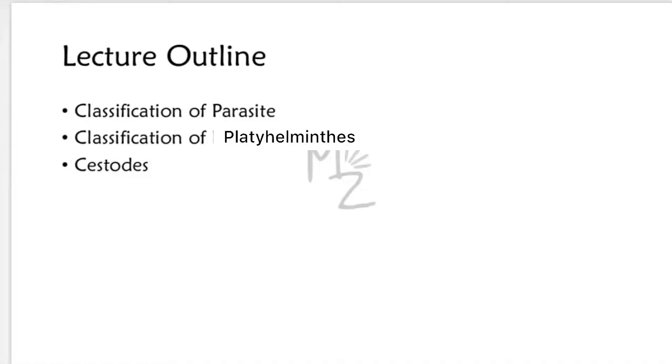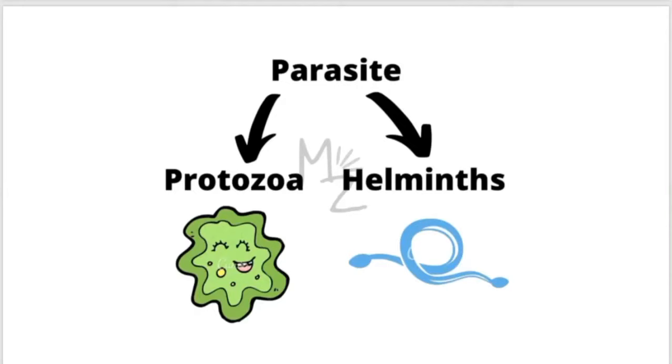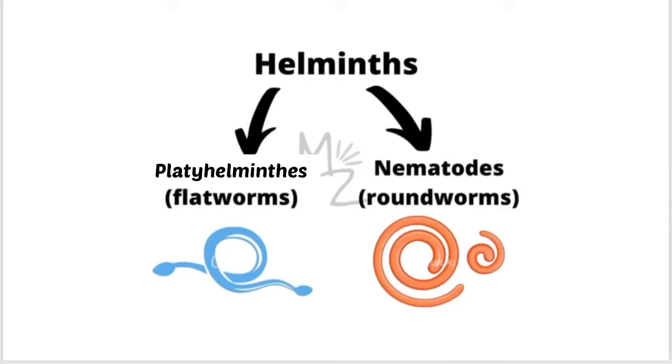Parasites are classified into two main categories. The first one is protozoa and the second one is helminths. Protozoa for example entamoeba histolytica, and in helminths we have tapeworms or flatworms. Helminths are further classified as platyhelminthes. Platy means flat and helminth means worm. So the platyhelminthes are also called as flatworms.